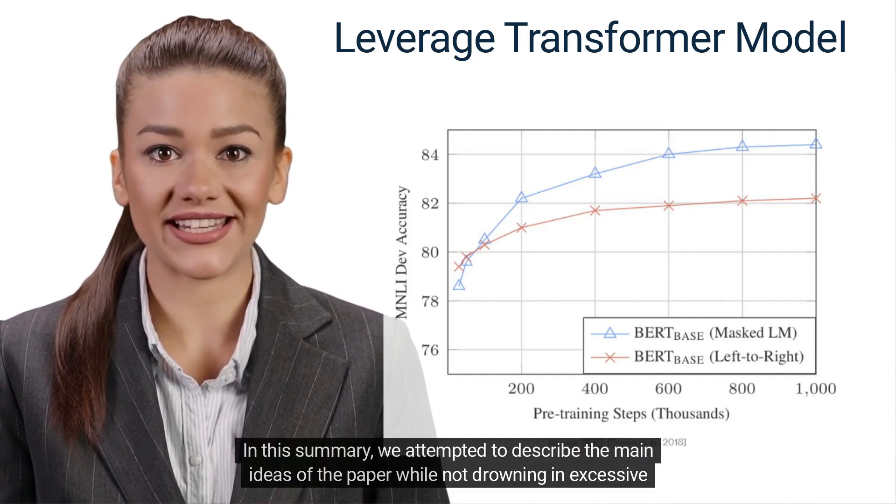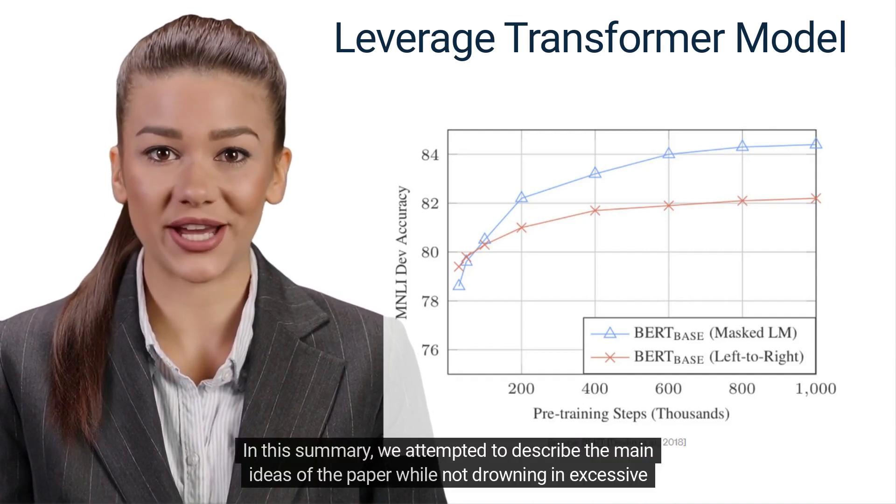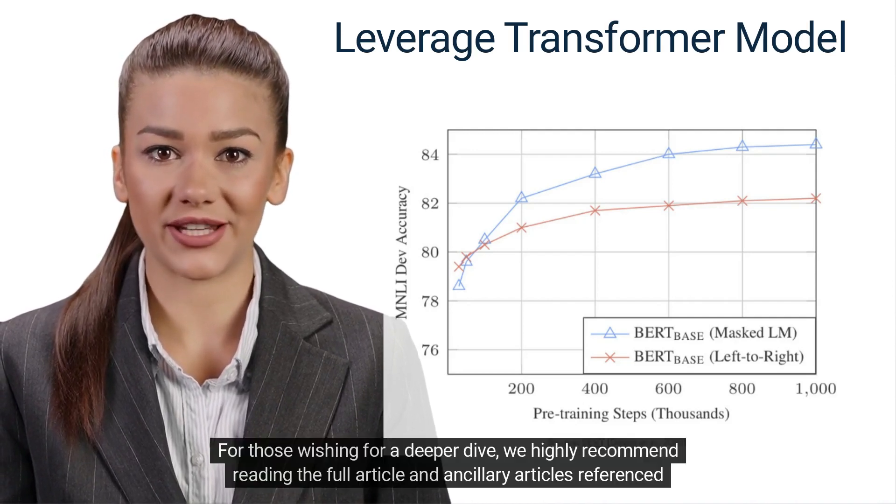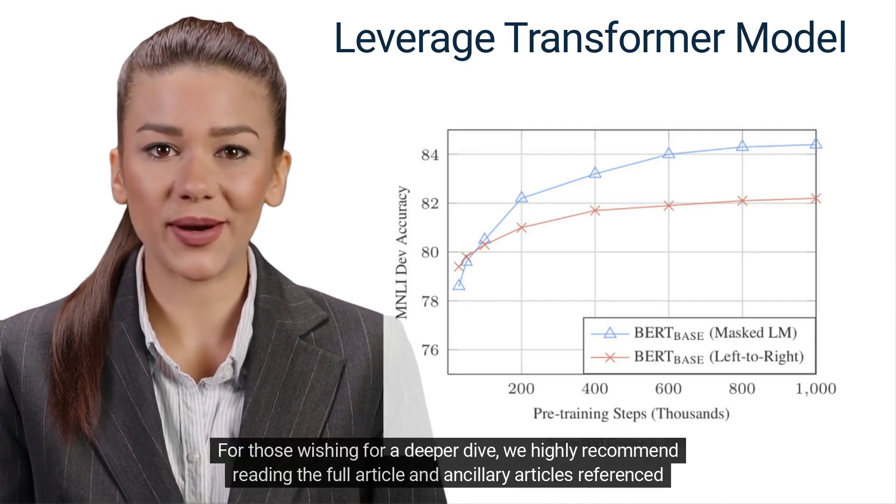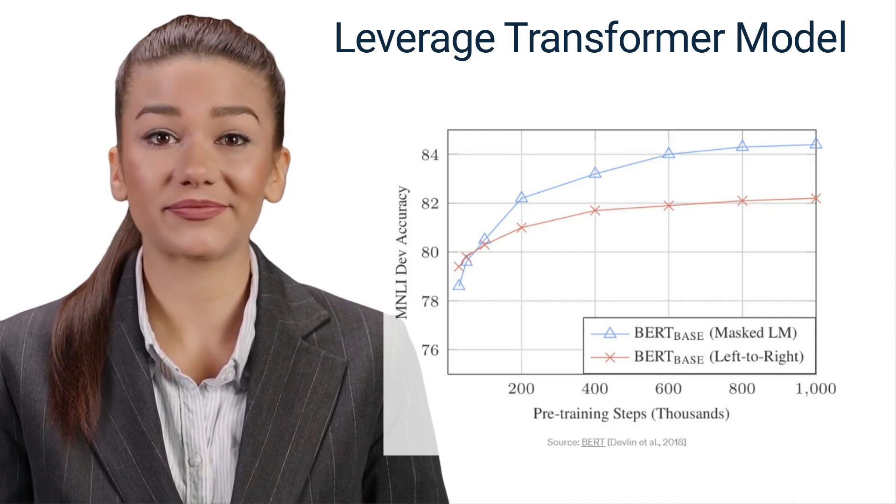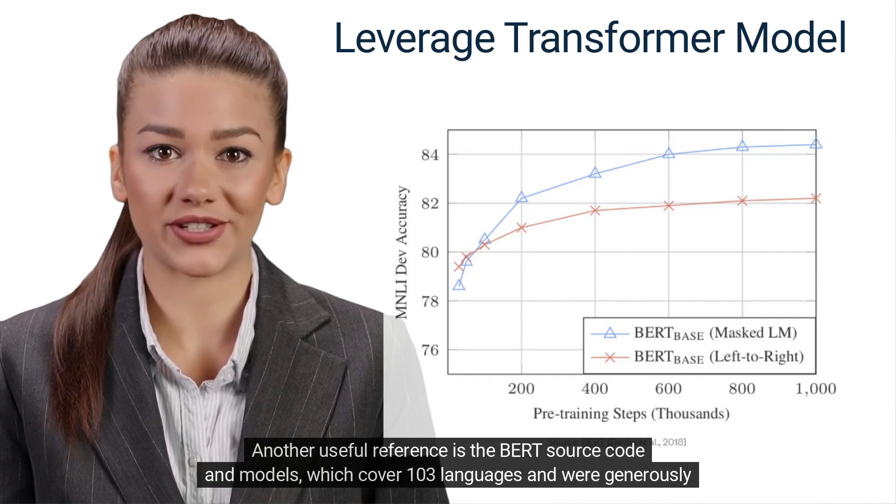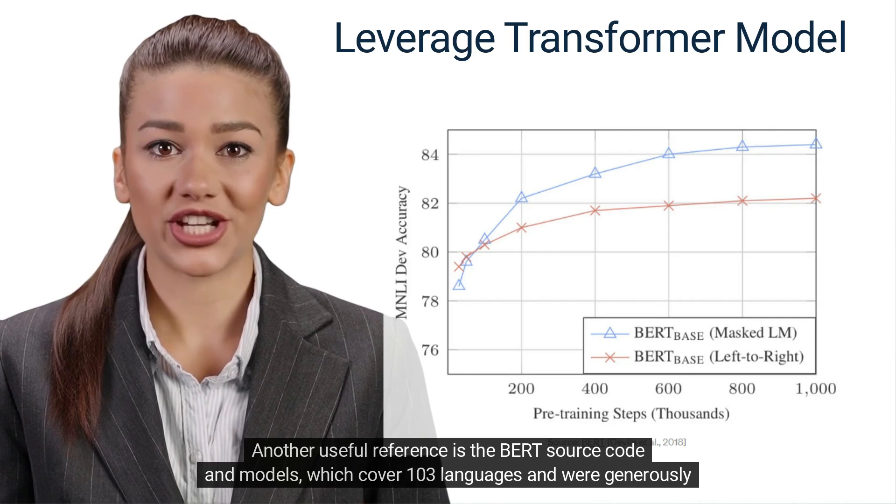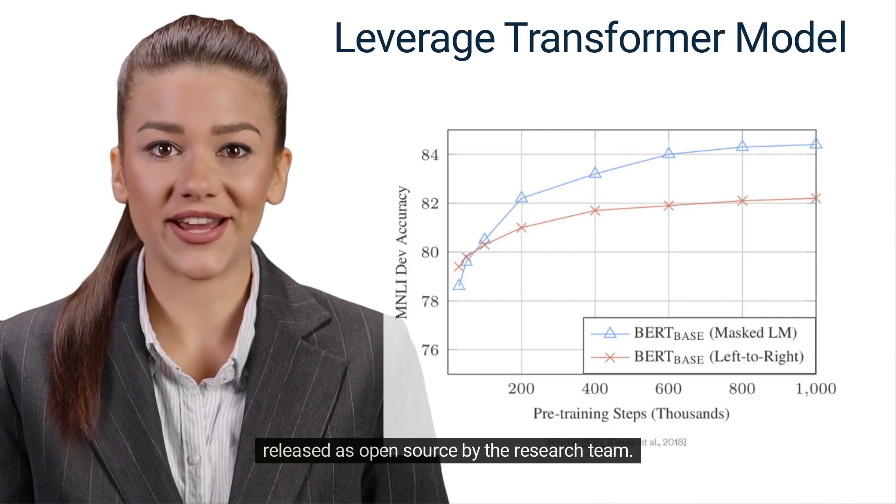In this summary, we attempted to describe the main ideas of the paper while not drowning in excessive technical details. For those wishing for a deeper dive, we highly recommend reading the full article and ancillary articles referenced in it. Another useful reference is the BERT source code and models, which cover 103 languages and were generously released as open source by the research team.